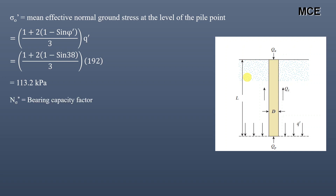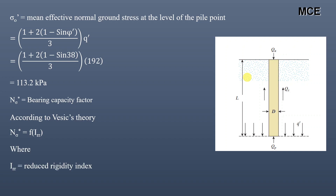N_σ is the bearing capacity factor. According to Vesic theory, it is a function of I_rr, the reduced rigidity index. Before calculating the reduced rigidity index, we need to calculate some other soil parameters first.